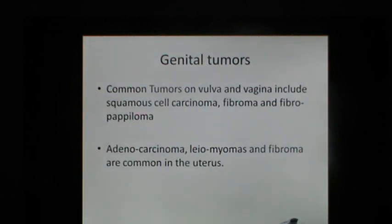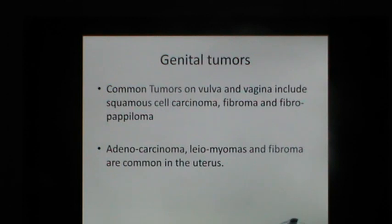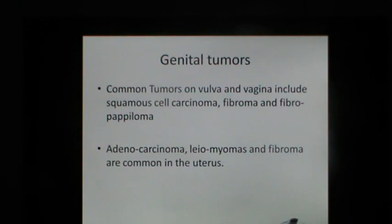Certain tumors may occlude the lumen and obstruct passage of gametes as acquired morphological causes of infertility. Common tumors of the vulva and vagina include squamous cell carcinoma, fibroma, and fibropapilloma. Fibroma-type tumors can be surgically removed, but squamous cell carcinoma therapy often fails. Adenocarcinoma, leiomyomas, and fibroma are common in the uterus. Fibroma can be removed from the uterus via flank laparotomy, though the fertility of such cows is poor to guarded.